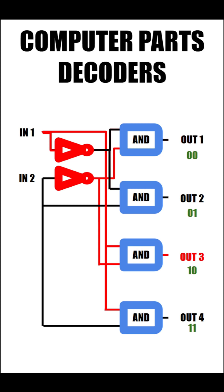Now, try and think what we have to do to turn on output 4. Well, if you said to turn on both inputs, you're correct. And it should be noted that on decoders, only one output can be turned on at a time.